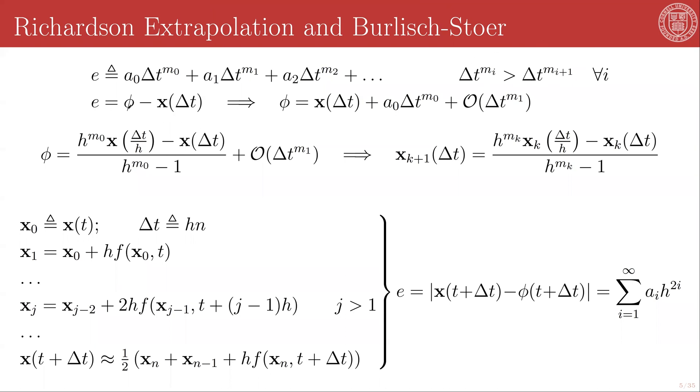Therefore, the error, which is the difference between the true solution φ and our approximation x evaluated at Δt, gives us the expression: φ, the true solution, is equal to x(Δt) plus A_0 times Δt^{m_0} plus all these other terms, which will be of order Δt^{m_1} or smaller, because we've made this assumption.